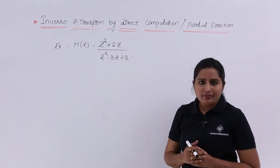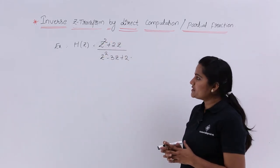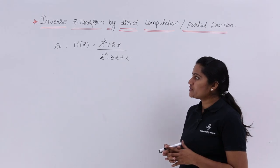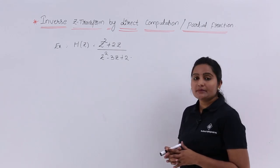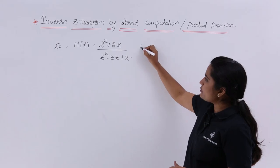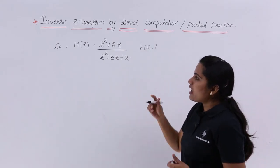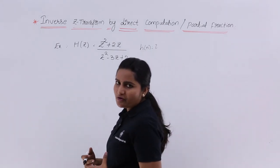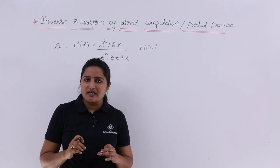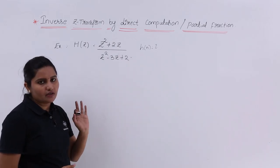The example problem given is: the transfer function of the system H(z) is equal to (z² + 2z) divided by (z² - 3z + 2). They are asking what is the impulse response of the system, h(n). To get the impulse response from this transfer function, we need to take the inverse Z-transform to get h(n).